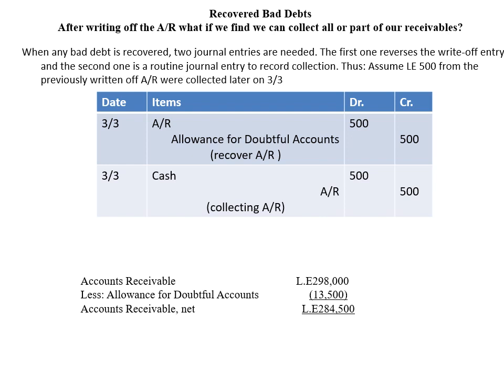Then a routine journal entry to collect the receivable: debit Cash, credit Accounts Receivable. You'll notice accounts receivable is debited by 500 in the first entry and credited by 500 in the second, so there is no net effect on the accounts receivable account — we just opened it to close it again. We opened it to show it is recovered (no need to keep it out of the allowance anymore), then closed it because we collected it in cash. In the balance sheet, accounts receivable remains at $298,000 — no change — but the allowance for doubtful accounts is affected.